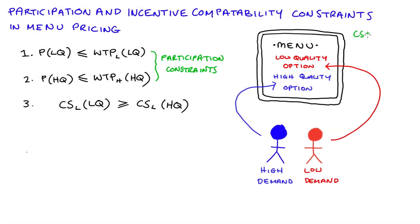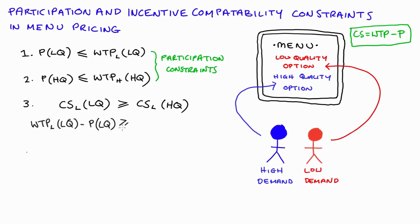We can break this down since consumer surplus equals willingness to pay minus price. So this condition reduces to: the willingness to pay of the low demand consumer for the low quality package minus the price of the low quality package must be greater than or equal to the willingness to pay of the low demand consumer for the high quality package minus the price of that high quality package.